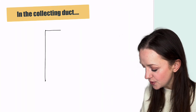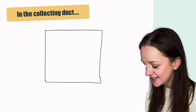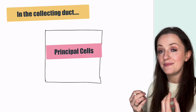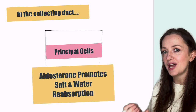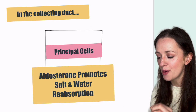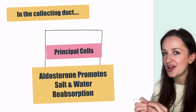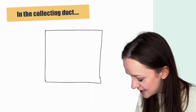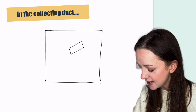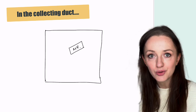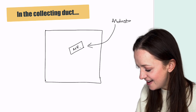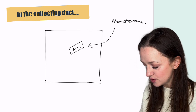So let's dive right into the collecting duct. In the collecting duct there are cells where aldosterone has its main effect, which is salt and water reabsorption. It does have another job, but its main job is salt and water reabsorption. Inside this little principal cell inside the collecting duct, we have the mineralocorticoid receptor, and aldosterone is going to swing by and bind to this receptor.